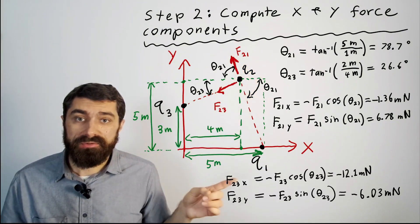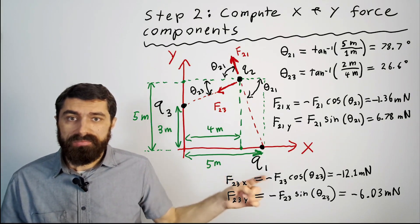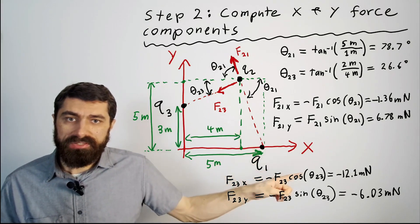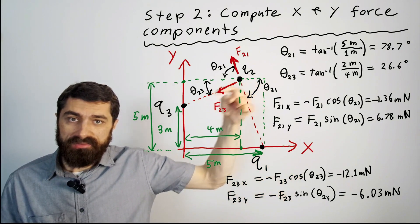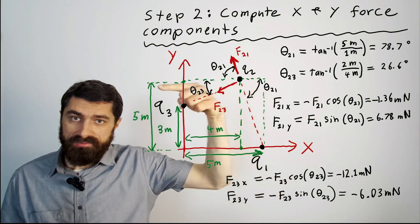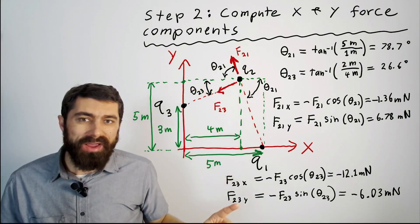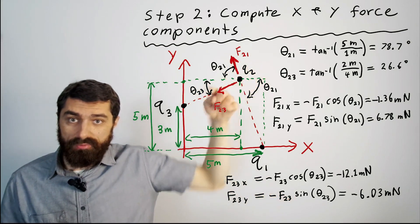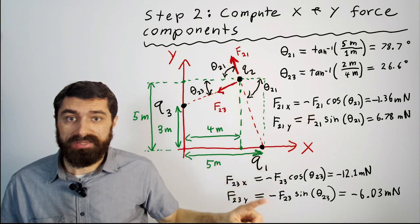And then we have f23x and f23y. Very similar here we've got f23 times the cosine of theta 23 and we know it's going to be negative because again it's pointing in this negative x direction. And f23y is also going to be negative because you can see it's pointed down unlike this one. So here it was positive but here we make it negative.